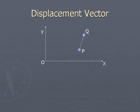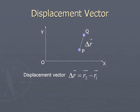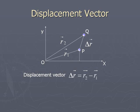Displacement vector. If two points P and Q are taken in a plane, the vector from P to Q is known as the displacement vector. Suppose the position vector of P is OP̄, that is R1̄, and the position vector of Q is OQ̄, say R2̄. The displacement vector ΔR̄ from P to Q equals R2̄ minus R1̄.